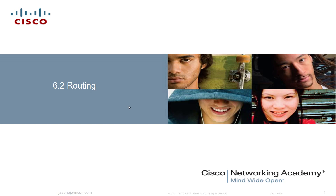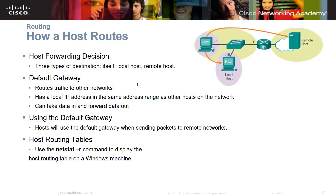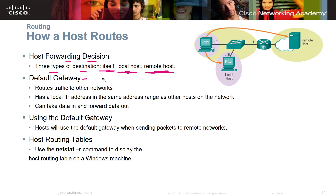So we've looked at V4 and V6. Let's take a look at routing. When we route, we are leaving the local area network and need to forward that information, so a decision has to be made. There are three types of destination: you can send it to itself, the local host, or a remote host. A router decides whether the information is for itself, stays on the local network, or needs to go out to a remote host. A default gateway — typically a router — routes traffic to other networks.